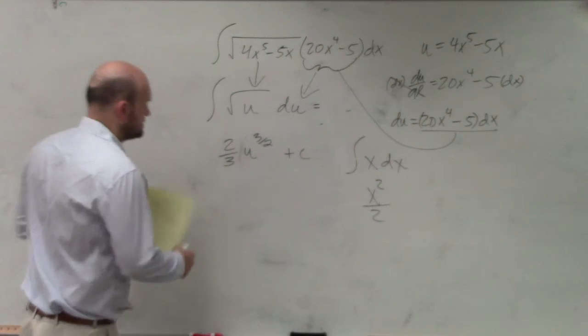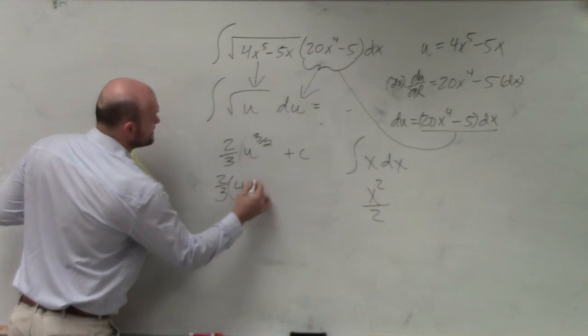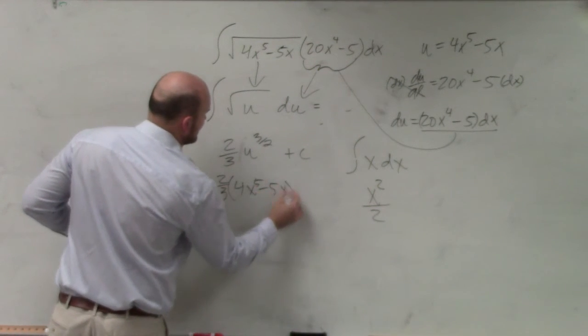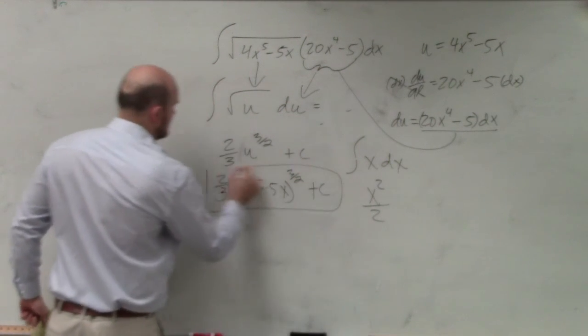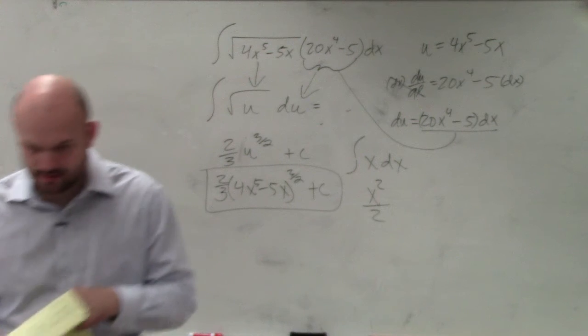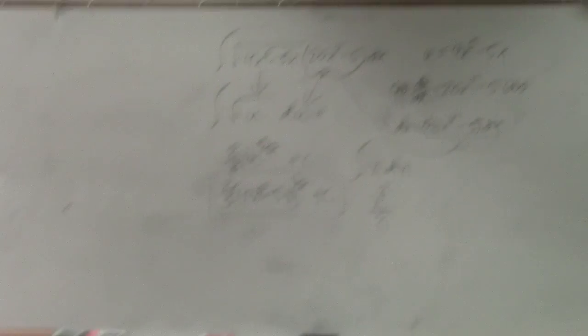We'll do another one. We'll go through others. And then I'm just going to multiply by my constant, 2 thirds times 4x to the fifth minus 5x to the 3 halves plus c. But I have a couple more just to go ahead and work on.